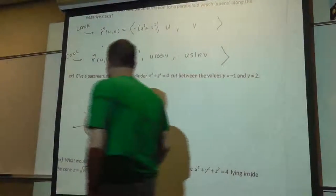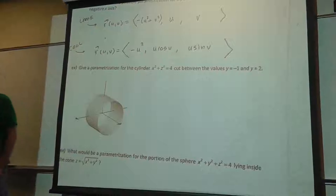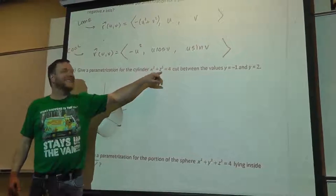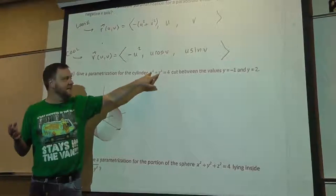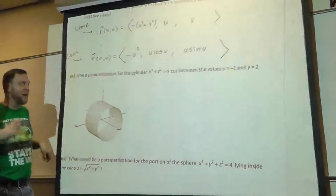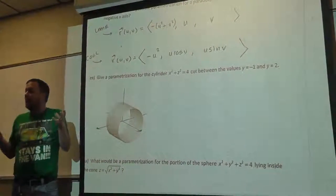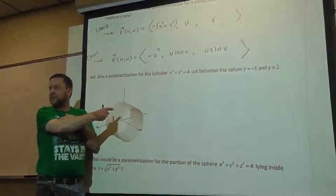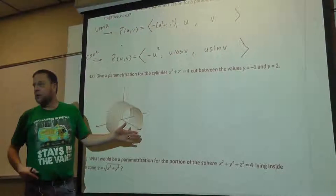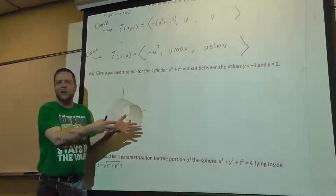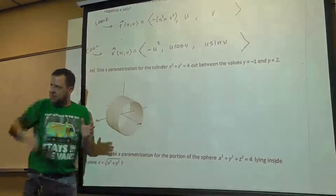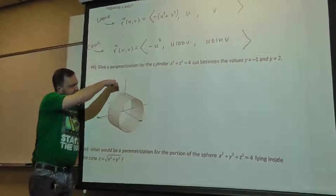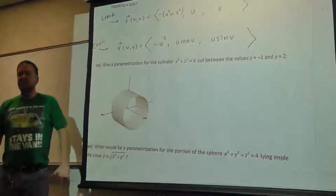I want to parameterize this cylinder. This is not x squared plus y squared equals 4 — this is x squared plus z squared equals 4. Since the variable y is missing from this equation, in the x-z plane that would just be a circle of radius 2, but in 3-space this is a cylindrical surface of radius 2 wrapped around the y-axis. I want the specific cut of this cylinder that goes from y equals negative 1 to y equals positive 2, so we just get that patch of it.